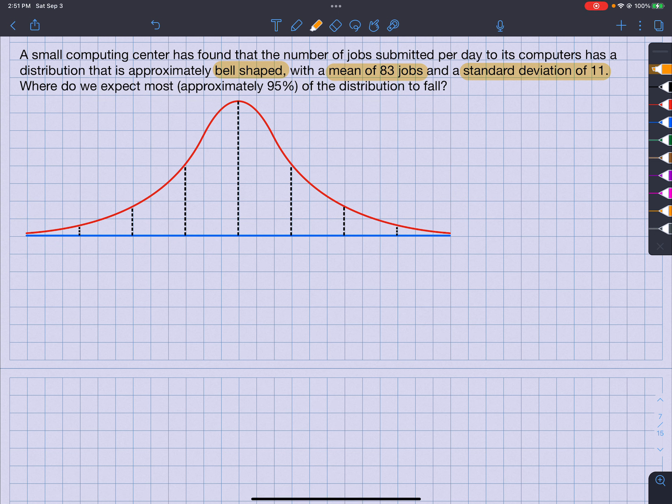So it tells me that the mean is 83. So 83 goes right in the center. And the standard deviation of 11 means that to the left of it, I would subtract 11 from 83. So I would go 83 minus 11, and this would be 72. Subtract another 11, this would be 61. Subtract another 11, I'll get 50. 83 plus 11, I get 94. Plus another 11, I get 105. Plus another 11, I get 116.